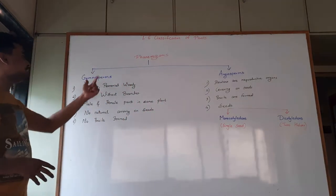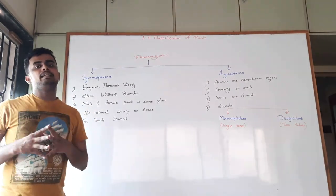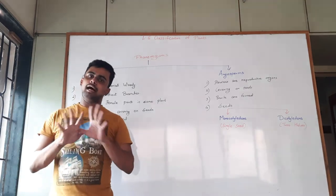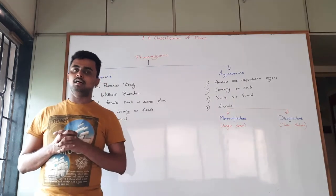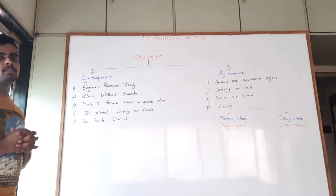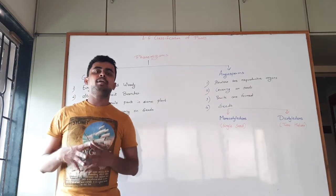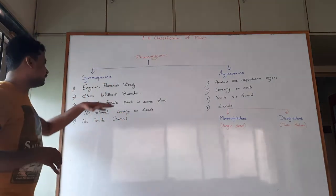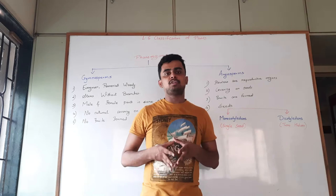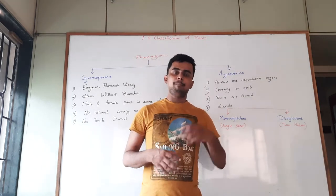The first characteristic of gymnosperms is that they are evergreen and perennial — throughout all seasons these plants remain green. Second, they don't have distinct branches on their stems; they are bushy trees, and the bushes that we see come under the category of gymnosperms. Third, the male and female parts required for the reproduction of plants are present in the same plant.